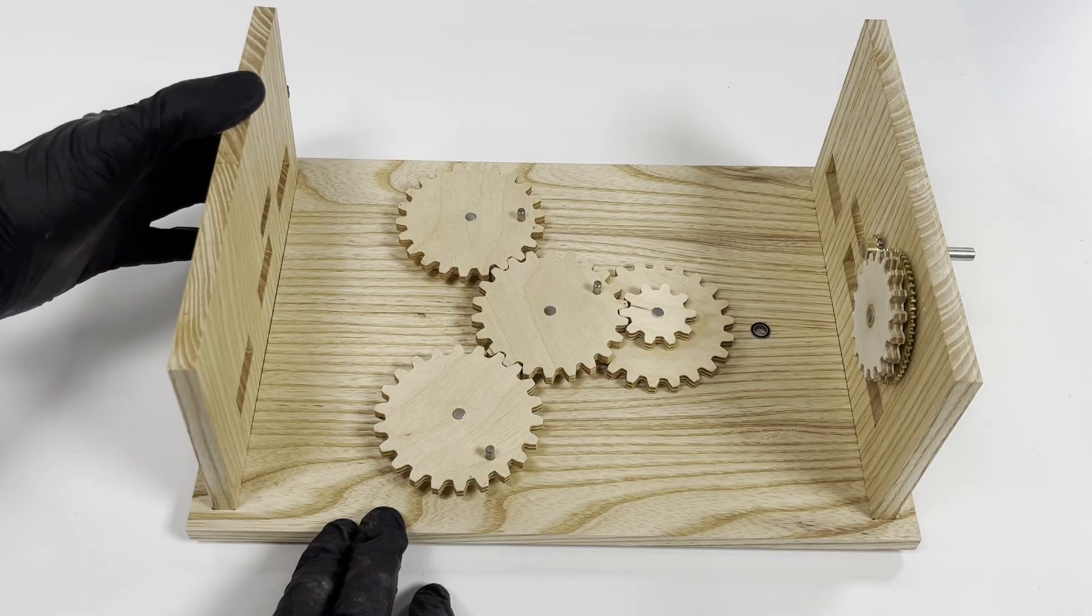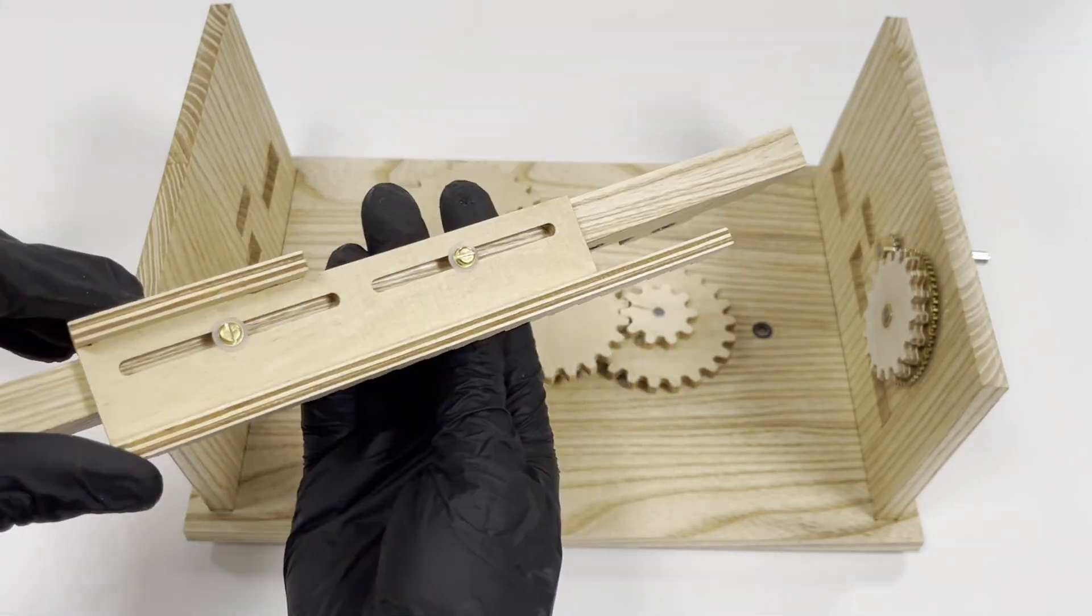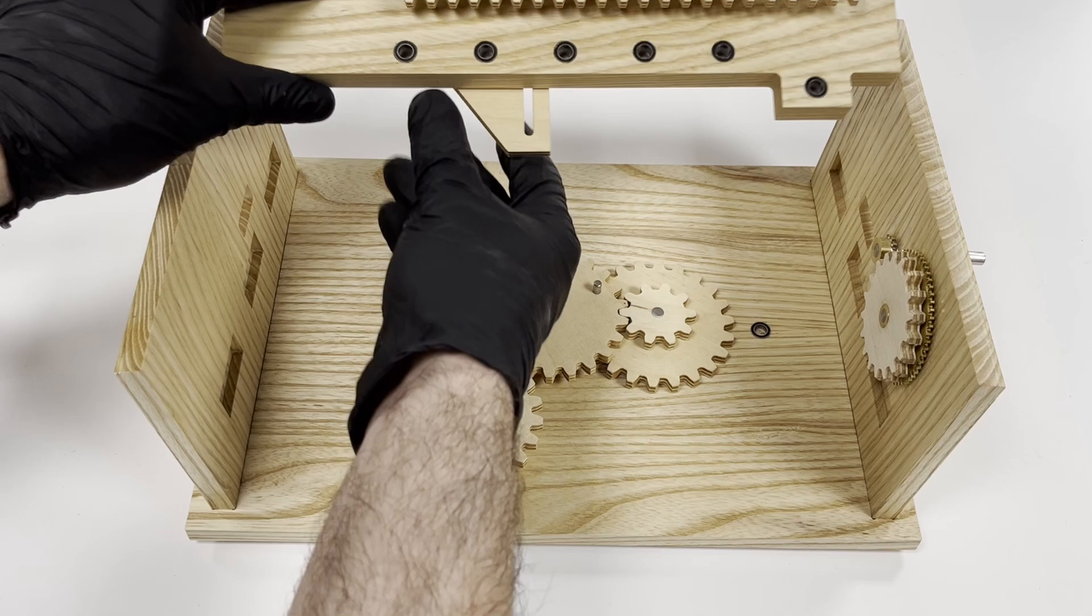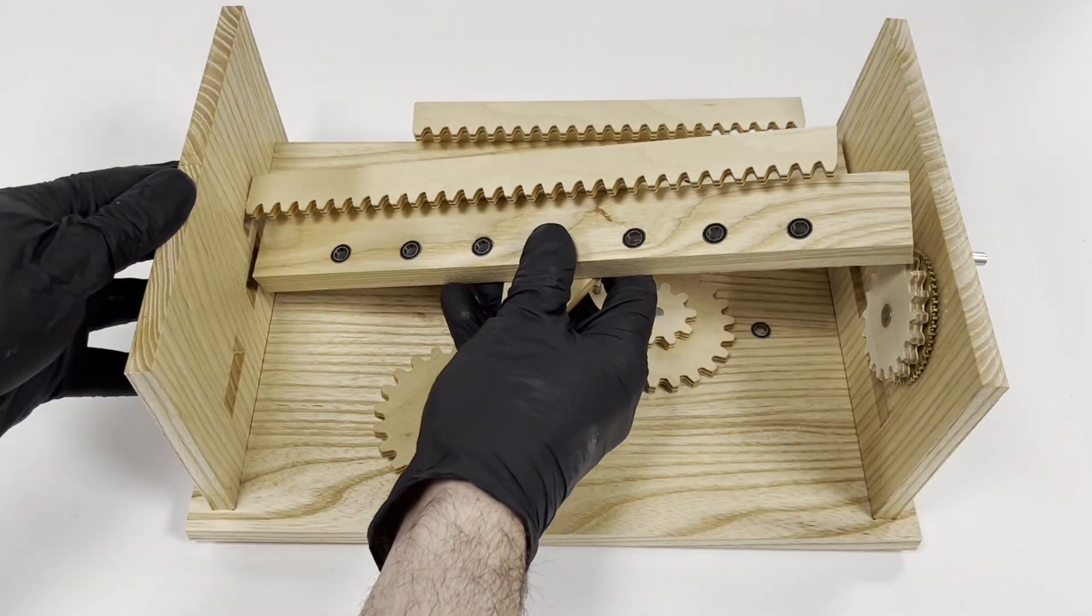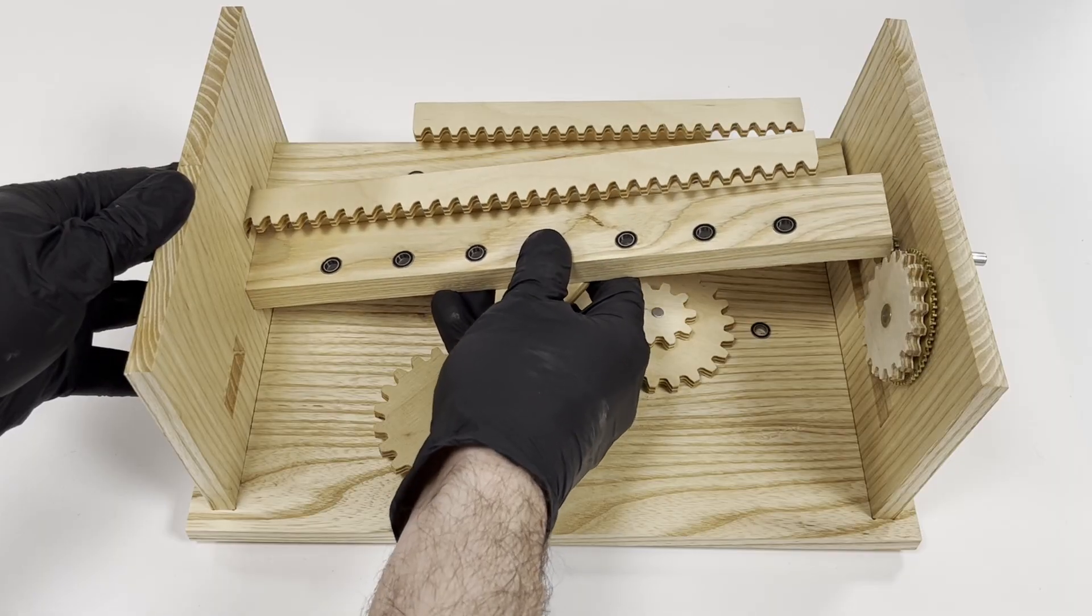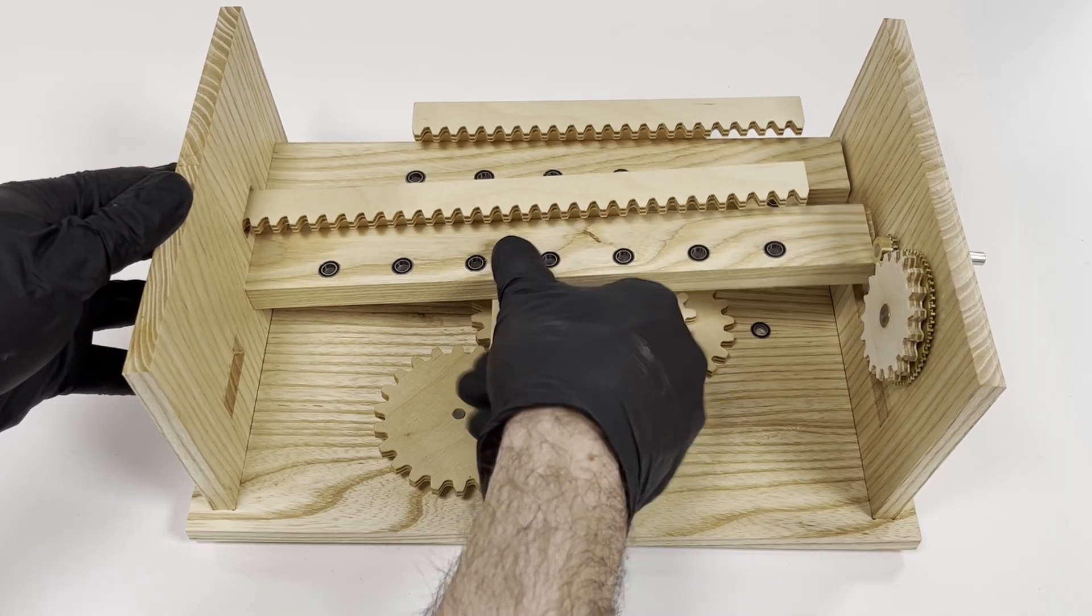But adding that extra gear reversed the direction of rotation, and because I prefer my automata to operate clockwise, I had to reposition the yoke gears at the base so the flamingos would still lead from the front row.